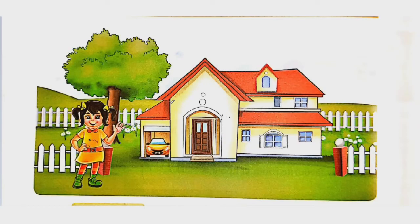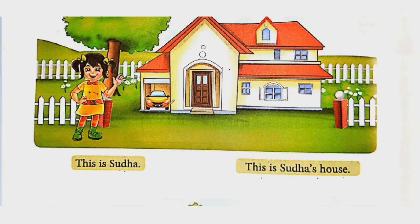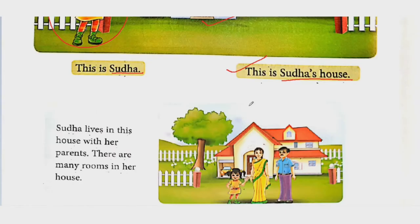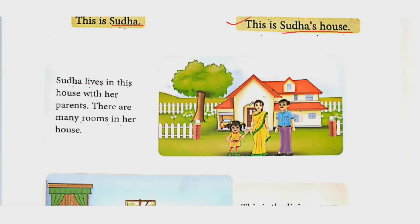Now look at this picture. What is this? Ek ladki hai aur ek house hai. Kaun hai yeh? This is Sudha — the name of this girl is Sudha. And this is Sudha's house. Let's learn more about Sudha's house. Yeh hain Sudha aur yeh uske parents. Sudha lives in this house with her parents — Sudha is ghar mein rehti hai uske mummy daddy ke saath.